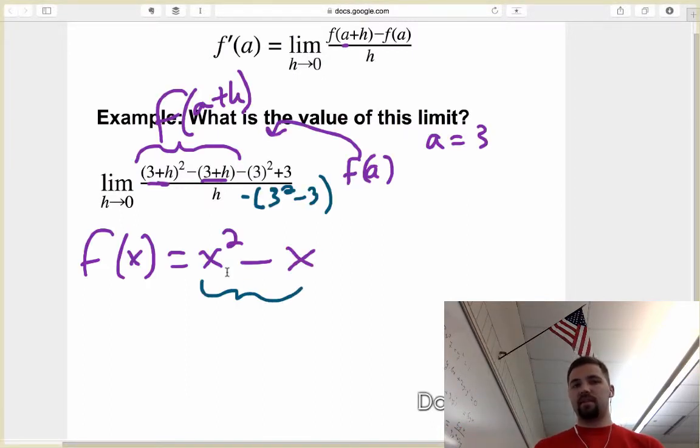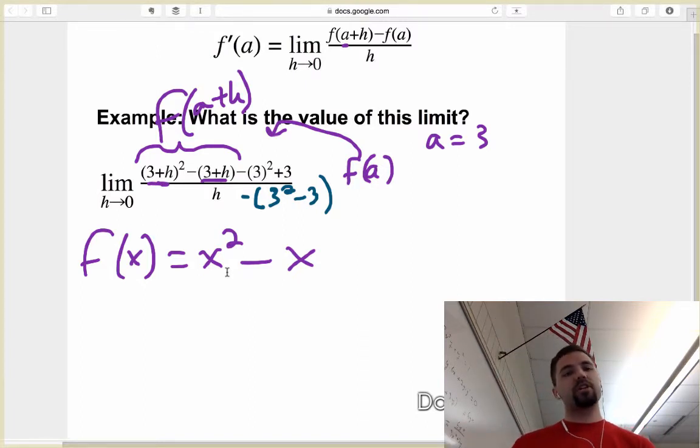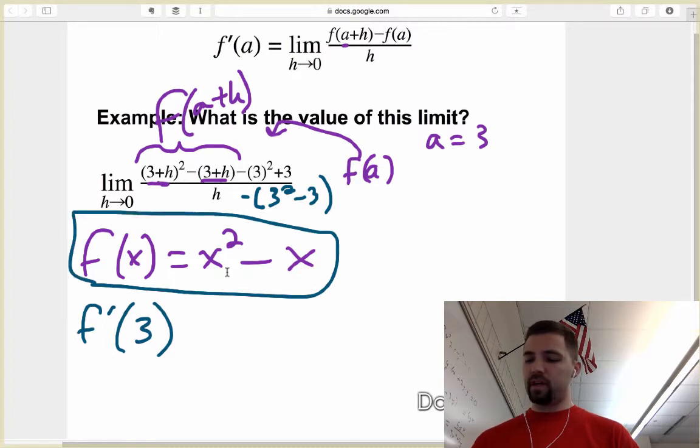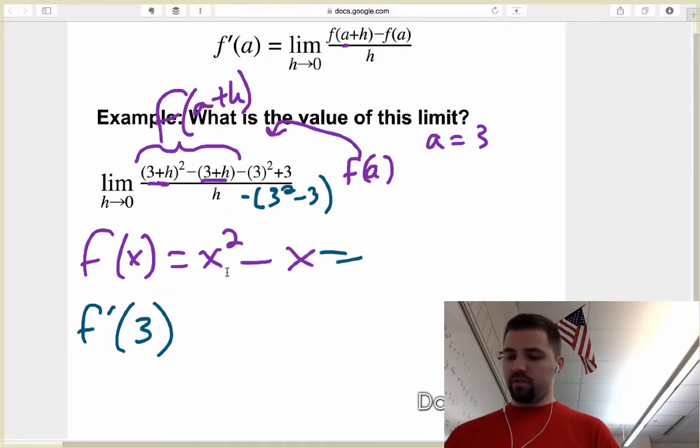So all that's happened in the limit is, before they gave you the problem, they distributed the negative. So if this is my function, then what this question is really asking me is it's saying hey, find f prime at 3 when your function is this. And to do that, we just need the derivative of the function, which is simple enough to figure out, 2x minus 1.